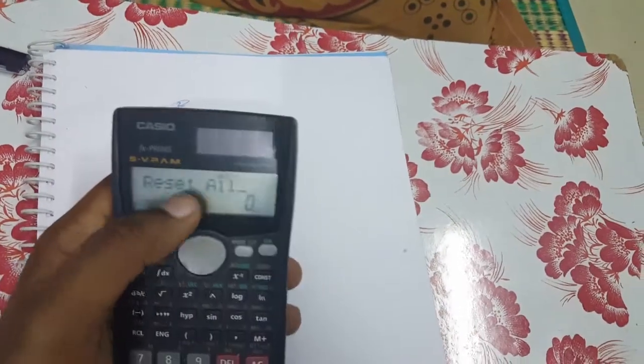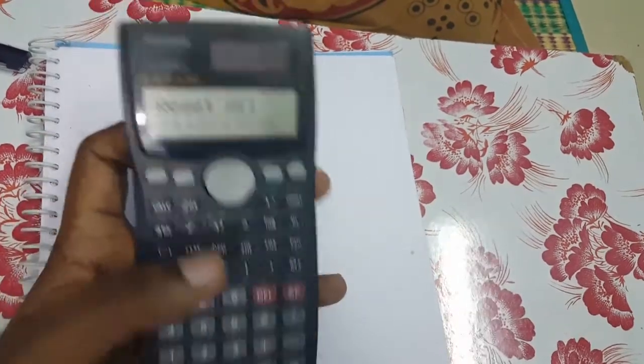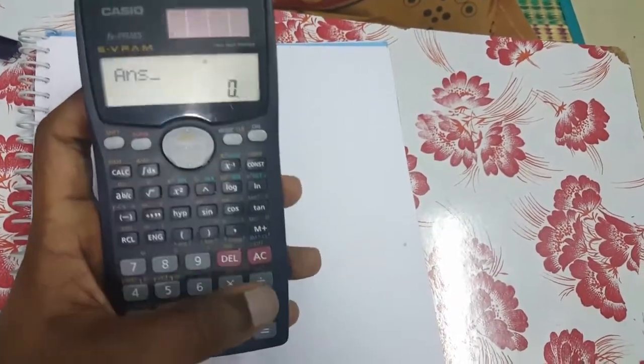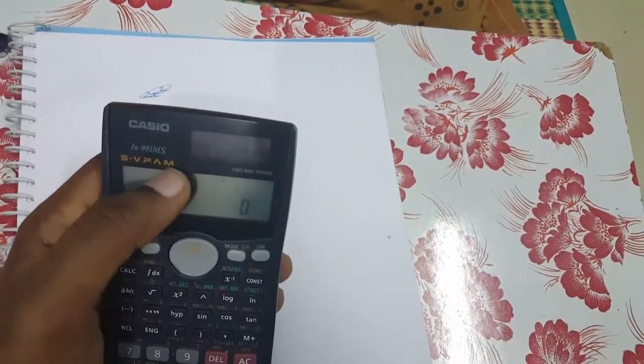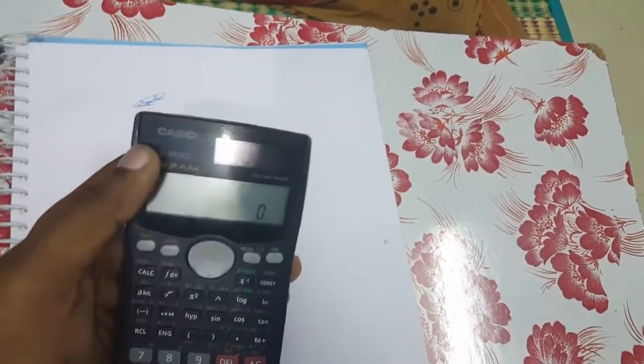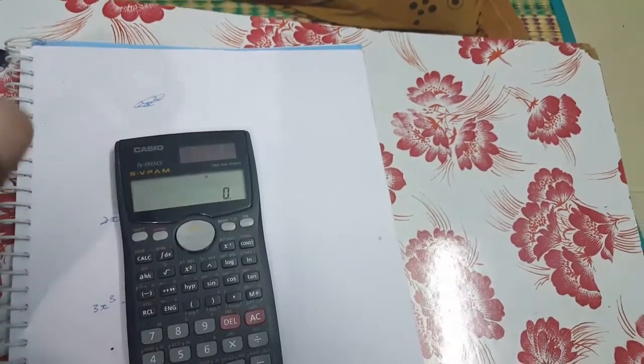It is displaying reset all. Giving equal to yes, reset all. Next if you press the on button, all are reset. All the modes you have applied are reset and math button or any button you can press. It will appear in this area. It is resetted.